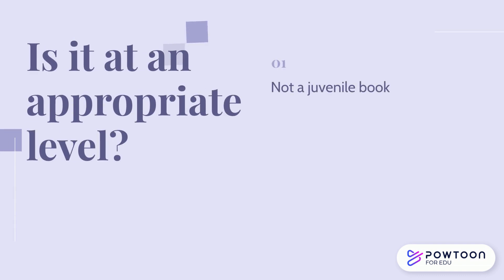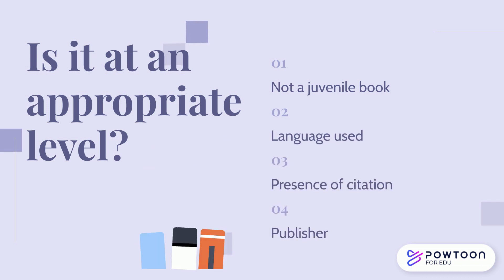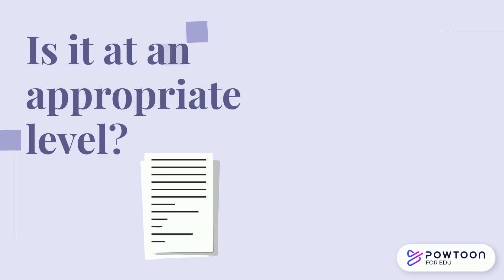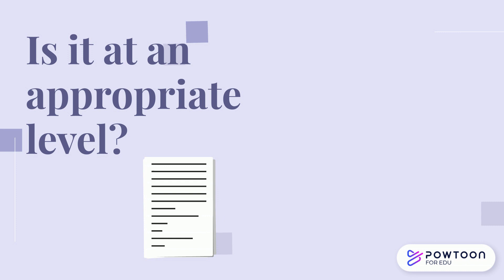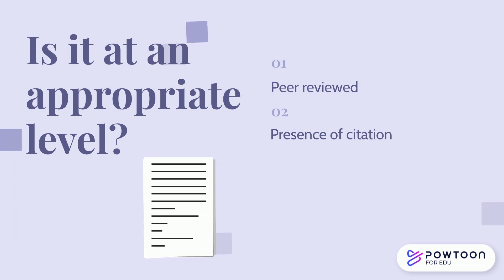Looking for books without the subject 'juvenile' is a good first step to determine if a book is written at the right level for your research. When looking at books, you need to consider a few more aspects, such as language used, presence of citations, and publisher. Journal articles are easier to determine relevance. If the article is peer-reviewed, it means it is an academic journal article, and most journal articles will be written at an appropriate level and therefore relevant to your topic.